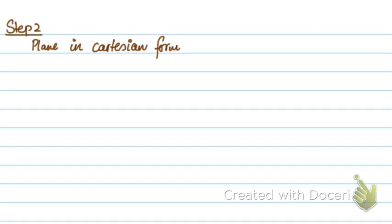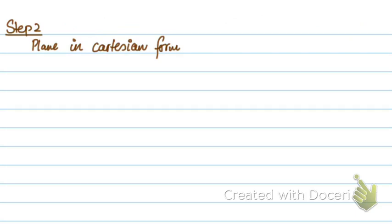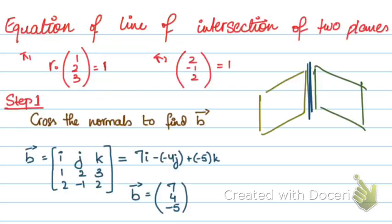Step 2, write the equation of the plane in the Cartesian form. So the equation of the first plane was r·(1,2,3) equals 1. So this will be x plus 2y plus 3z equals 1. Now the other equation is,